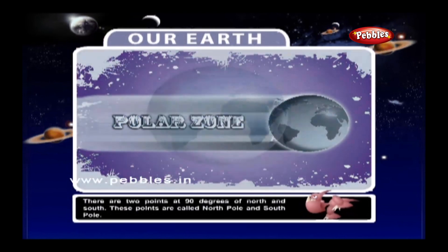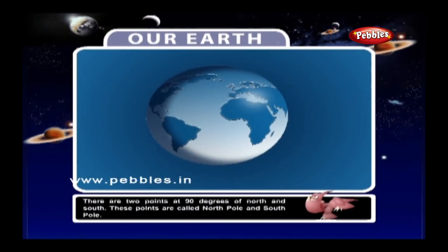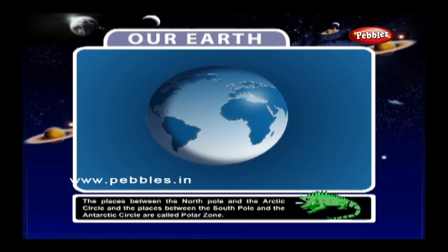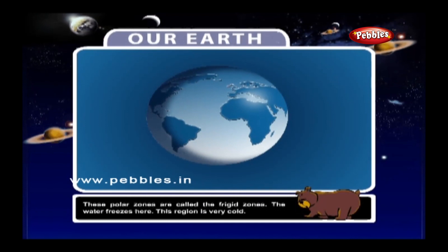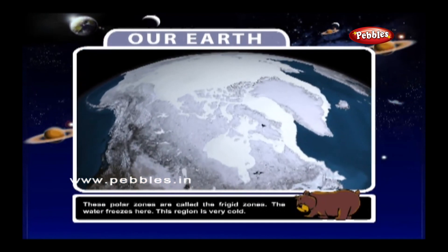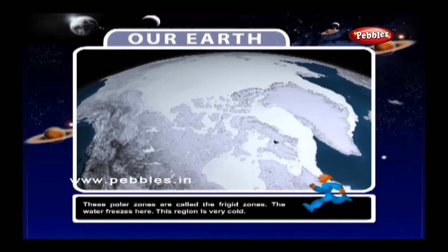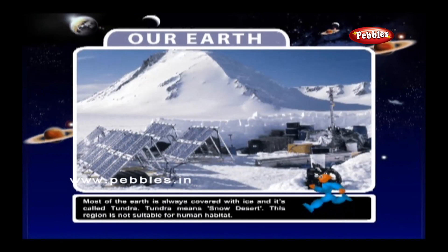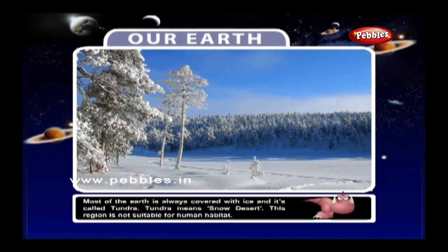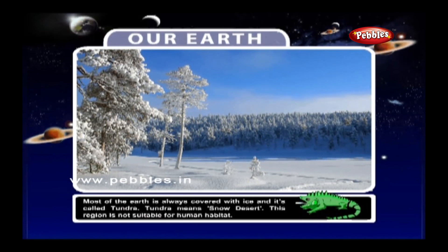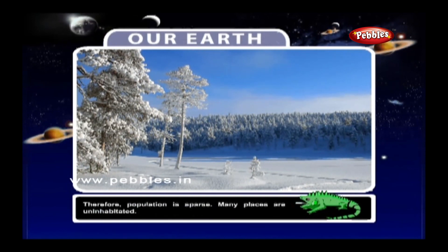The Polar Zone: There are two points at 90 degrees north and south, called the North Pole and South Pole. The places between the North Pole and the Arctic Circle, and between the South Pole and the Antarctic Circle, are called the Polar Zone, also known as the Frigid Zones. The water freezes here and this region is very cold. Most of the earth is always covered with ice, called Tundra, which means snow desert. This region is not suitable for human habitat, so population is sparse and many places are uninhabited.